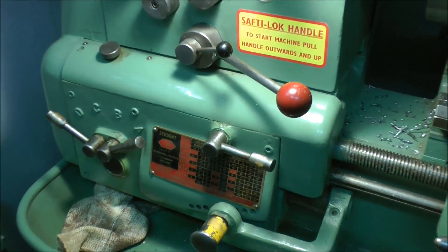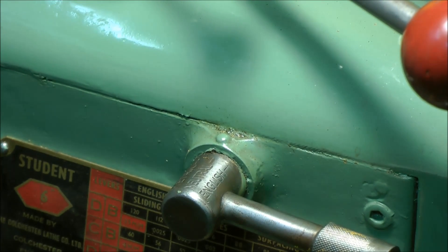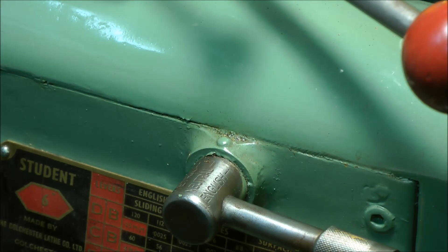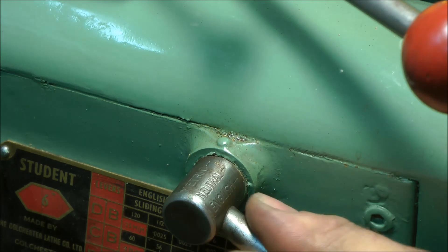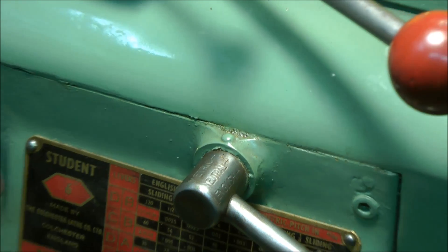First of all we need to select the thread type and we have a selection of English or metric on the Colchester. A metric it is, just wiggle that around, that seems to be in. So there we go, that's the metric.